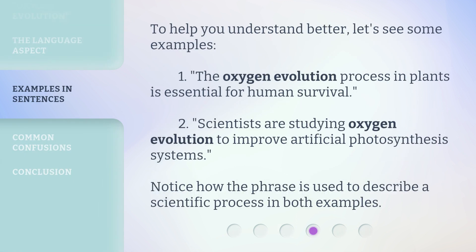To help you understand better, let's see some examples. One: the oxygen evolution process in plants is essential for human survival. Two: scientists are studying oxygen evolution to improve artificial photosynthesis systems. Notice how the phrase is used to describe a scientific process in both examples.